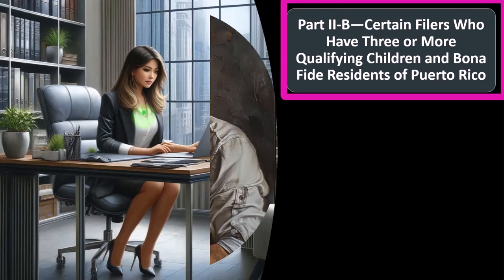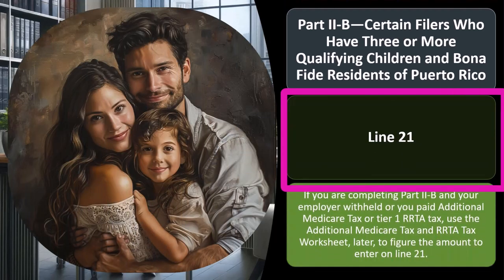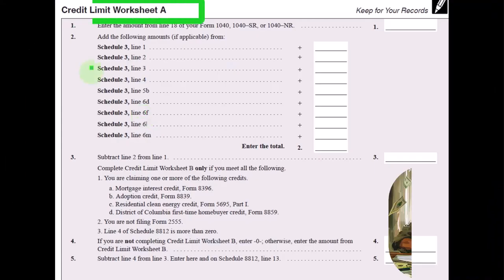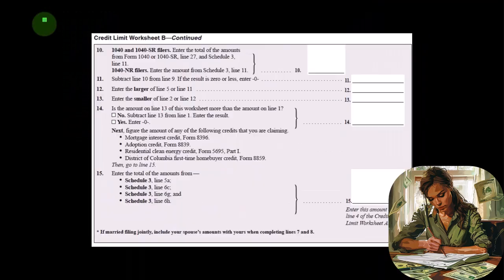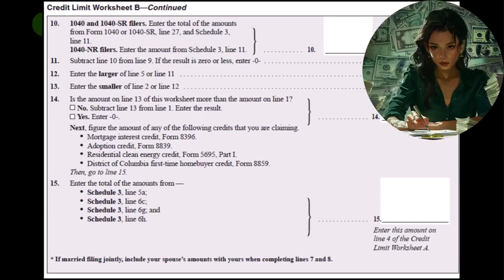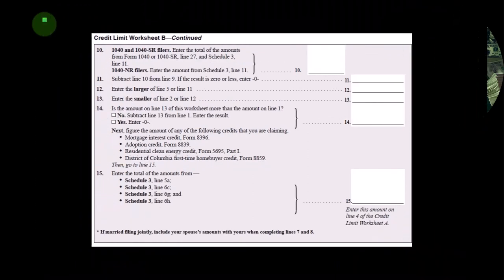Part 2B covers certain filers who have three or more qualifying children and bona fide residents of Puerto Rico. Line 21: if you are completing Part 2B and your employer withheld or you paid additional Medicare tax or tier one RRTA tax, use the Additional Medicare Tax and RRTA Tax Worksheet to figure the amount to enter on line 21. Here's Credit Limit Worksheet A. In future presentations we'll go into a tax software example so we can see how data input is applied, deconstruct what's happening in the end forms, and verify data input and run tax planning scenarios.